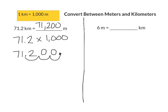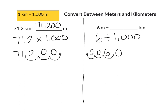Next we're going to go from meters to kilometers, which is the opposite. Instead of multiplying by 1,000, this time we're going to be dividing by 1,000. So we take 6 meters and divide by 1,000, moving our decimal point three places to the left — 1, 2, 3 — and add in zeros to the places created. So 6 meters is equal to six thousandths kilometers.